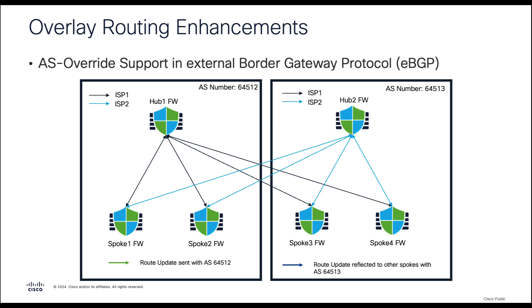Let's take an example using scenario 1. Assuming hub 1 is down and spoke 1 wants to communicate with spoke 2 via hub 2, spoke 1 intends to learn routes of spoke 2, but due to the same AS number in the AS path, the routes will not be installed. The AS override feature addresses this by replacing the AS number of the originating router with the AS number of the sending BGP router.